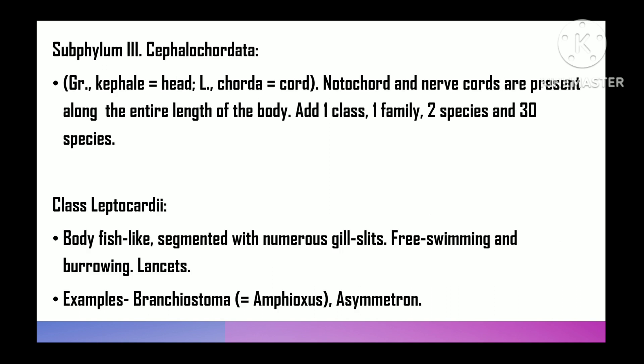Subphylum 3 is Cephalochordata — 'cephalo' means head, 'chordata' means cord. Notochord and nerve cord are present throughout the life along the entire length of the body. Includes one class, two genera, and 30 species. The class is Leptocardii — body fish-like, segmented, with numerous gill slits, free-swimming lancelets. For example, Branchiostoma, that is Amphioxus.